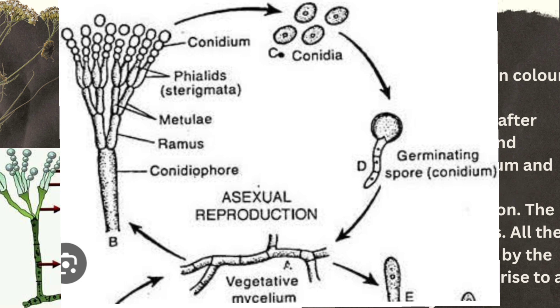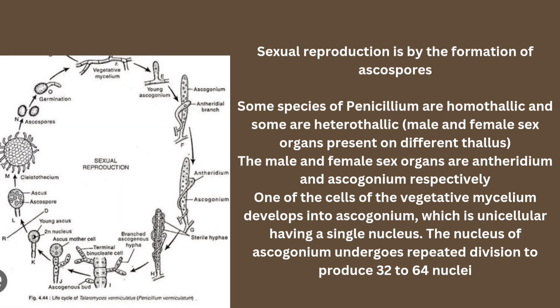Now let's talk about sexual reproduction. Penicillium is homothallic, meaning male and female sex organs are present on the same organism. The male sex organ is called the antheridium. The female sex organ is called the ascogonium, which is unicellular and contains a single nucleus.